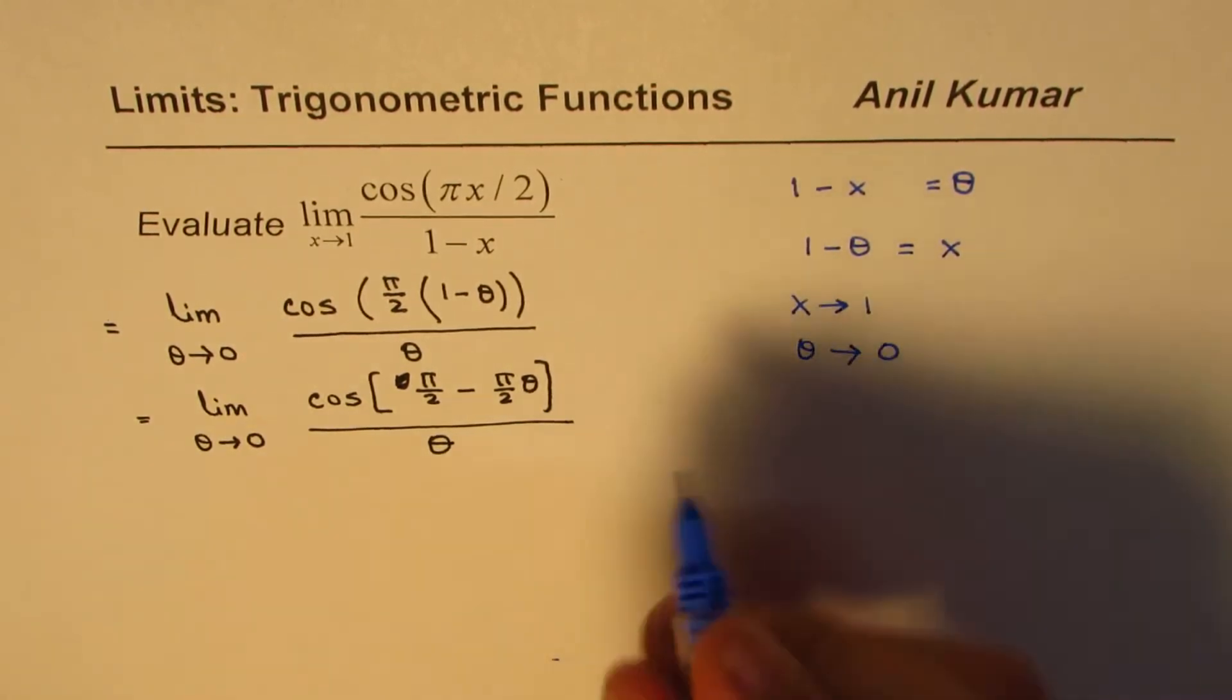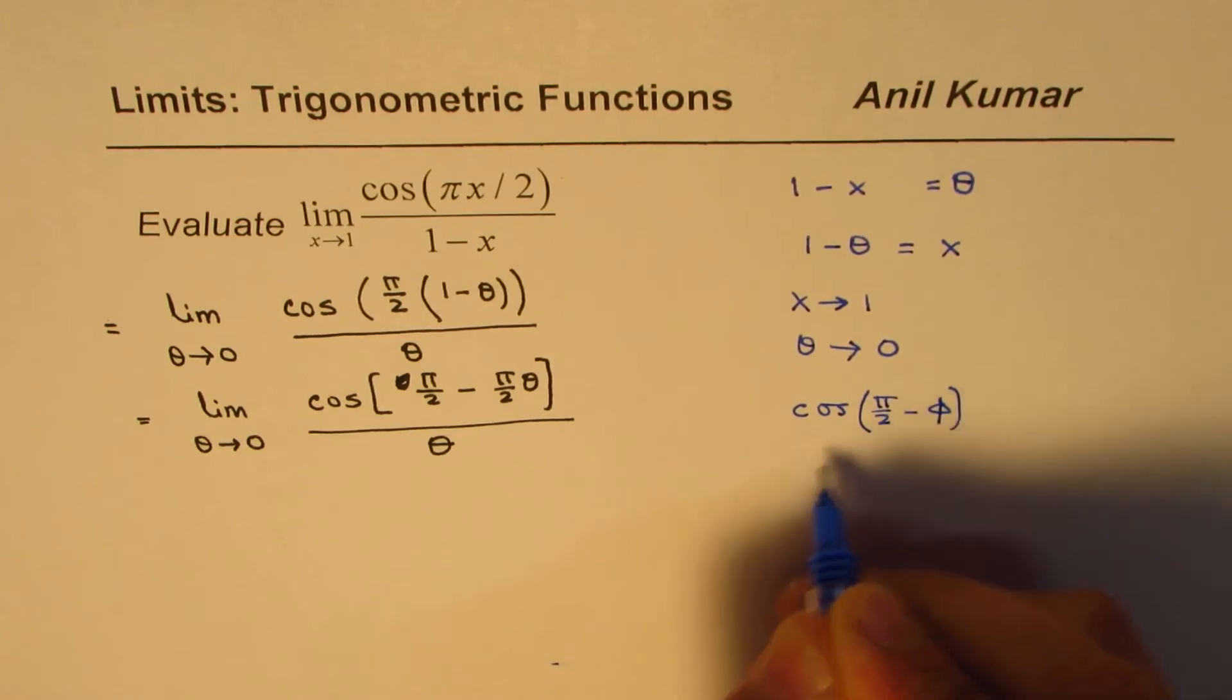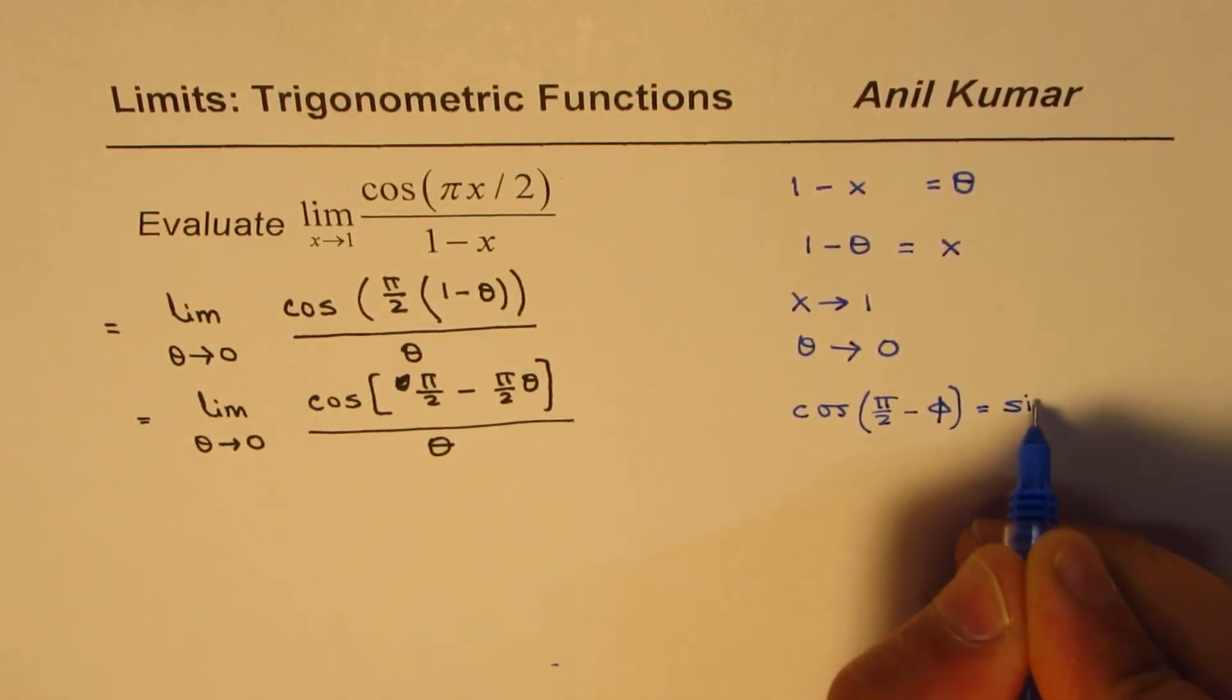Well, let's look into this part. What is cos(π/2 minus some angle)? Let's say φ. That is indeed equal to sin φ, right?